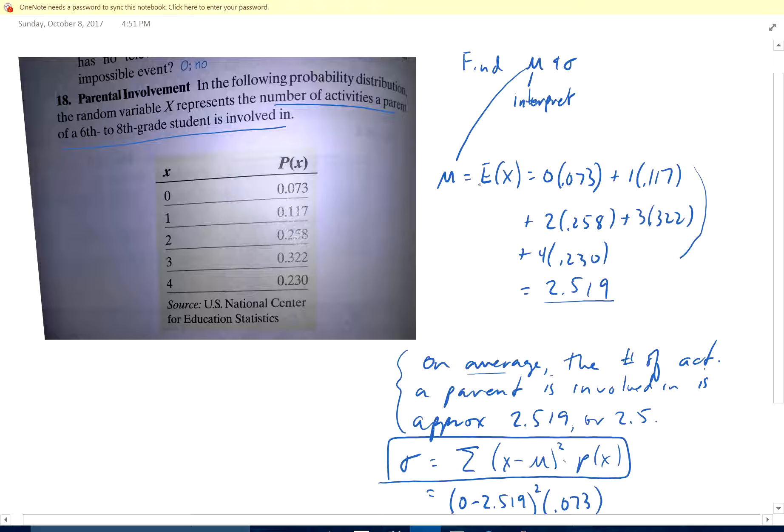The mean is just the weighted average or the expected value - what we expect in the long run. It's the value times the probability, and you just add them all up. So it's 2.519 activities. The interpretation is: on average, the number of activities a parent is involved in is approximately 2.519 or 2.5.